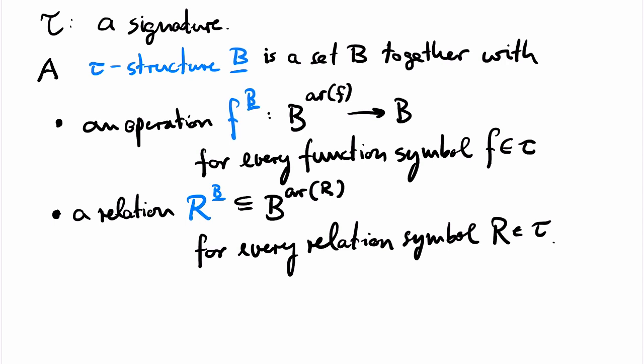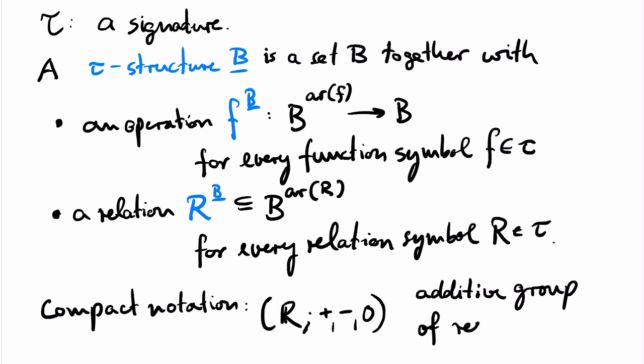In practice, one is often sloppy with the distinction between function symbols and the respective operations. For example, one usually writes R plus minus zero for the additive group of the real numbers. The signature here is the signature of abelian groups that we have seen earlier and the math letter R denotes the real numbers.